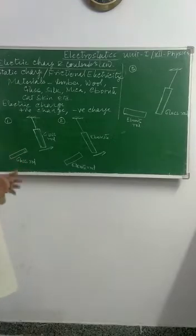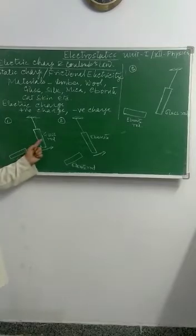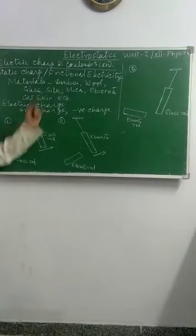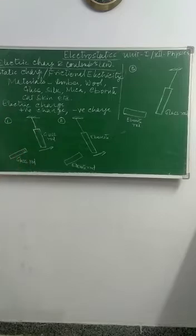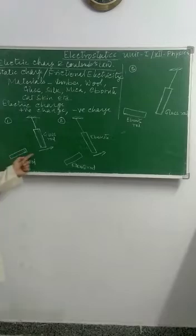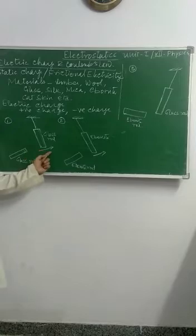Experimentally, we can show you. Now take the two glass rods. The first glass rod is rubbed with the silk and suspended by a cotton thread. When another similar glass rod rubbed with the silk is taken towards it, you will find the first glass rod moves away.